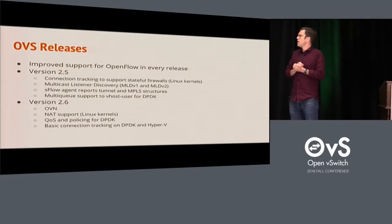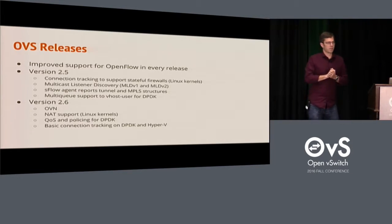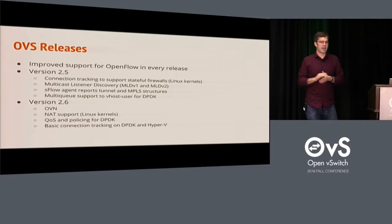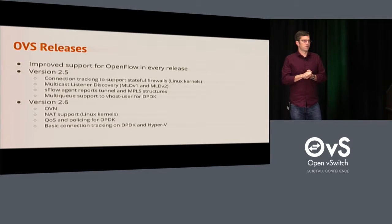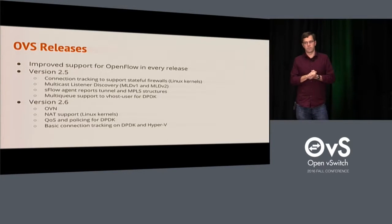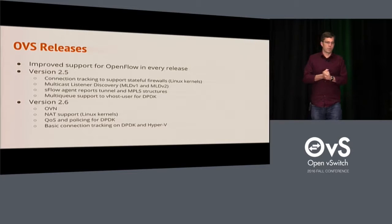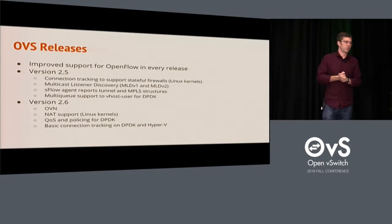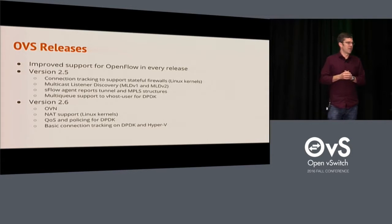In every OVS release we improve the OpenFlow support. For version 2.5, the main feature was introducing the connection tracker. That was a major source of pain for people who wanted to do stateful firewalling using Open vSwitch. In OpenStack, people would redirect to a different namespace running IP tables to do enforcement — it was a mess and it was slow. There were also ways to make Open vSwitch program its own flows, but that was very slow and wasn't very good security.